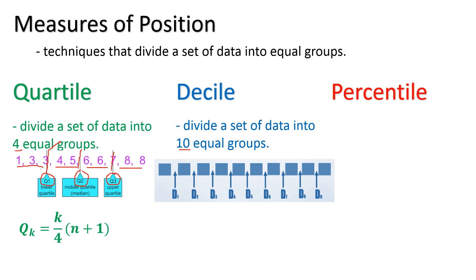Through this illustration, we are cutting the set of data into 10 equal groups. Just like with quartile, our highest decile class is up to decile 9 only. If we are to compute such a value under decile, the decile class is equal to k over 10, times n plus 1.